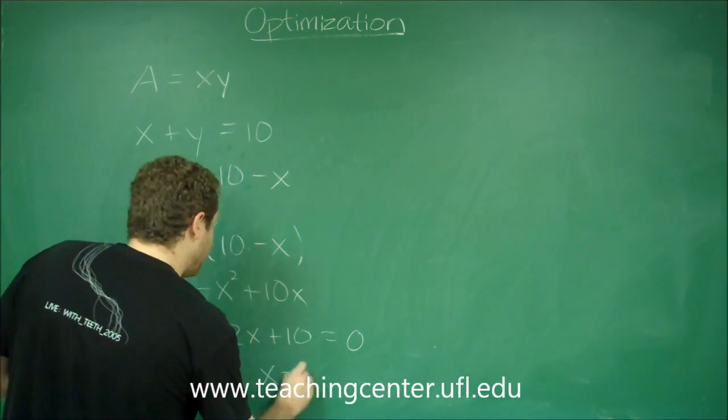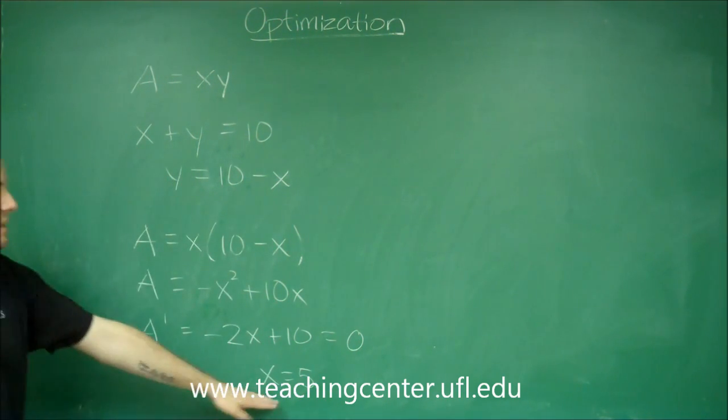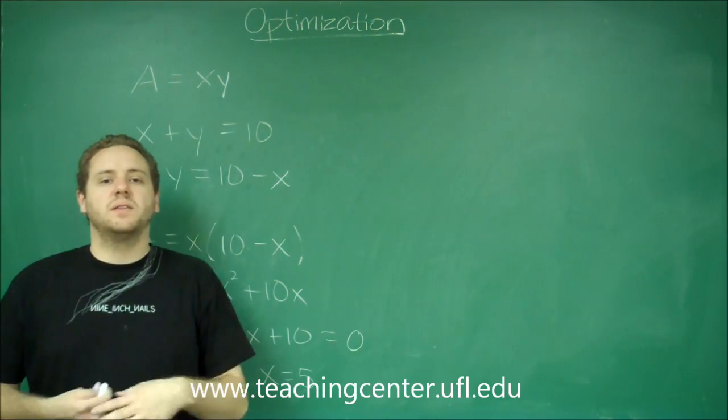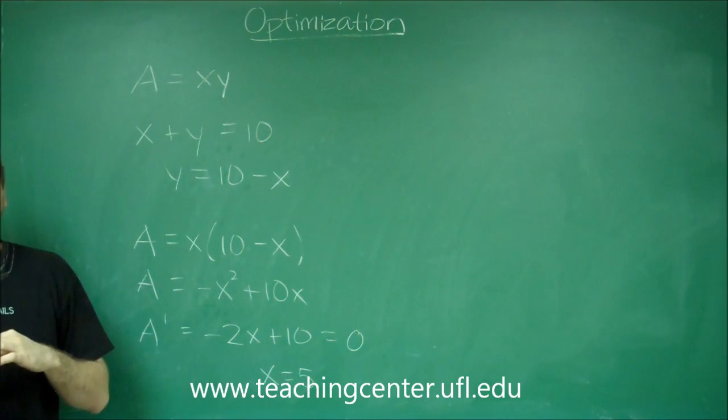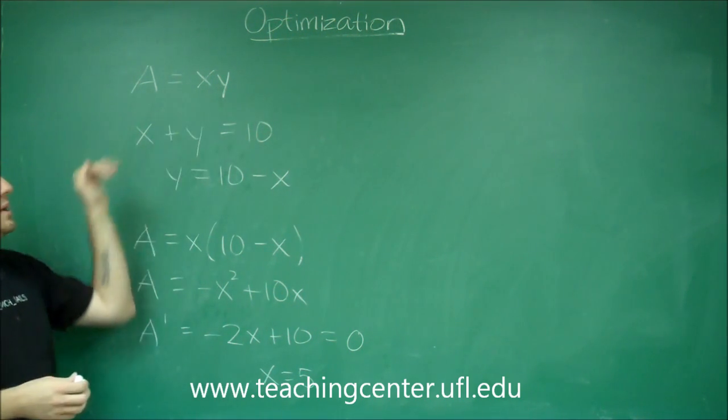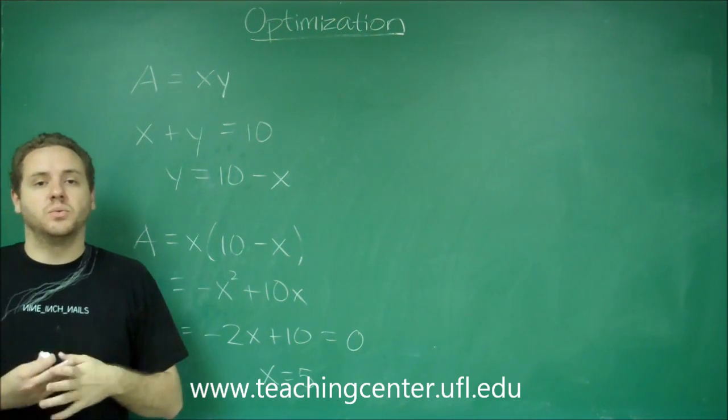Here I would get x = 5, and from x = 5, I could plug it back in to get y = 5. If I knew that the sum of my two dimensions of my rectangle had to be 10, and I wanted the biggest area possible, I would have to make both dimensions 5 - in other words, make it a square.